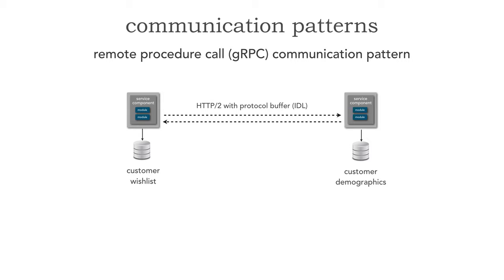Let's look under the covers and see how it works. With gRPC, we have something called a gRPC server. The customer demographics service — when we download gRPC — would install that gRPC server as part of that microservice. Correspondingly, I need a gRPC stub representing that customer demographics. And herein lies the trade-off associated with that really fast performance.